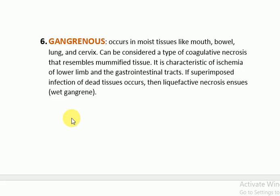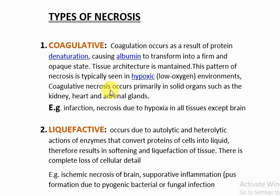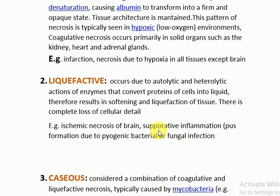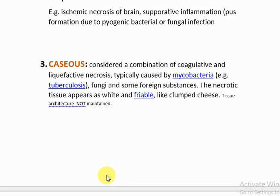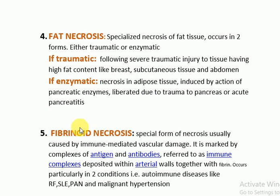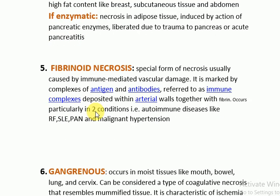To summarize the types of necrosis: Coagulative — protein denaturation, tissue architecture maintained; examples include infarction and hypoxic necrosis in all tissues except brain. Liquefactive — degradation of proteins, tissue architecture not maintained; example is necrosis of the brain. Caseous — occurs in TB, combination of coagulative and liquefactive, tissue architecture not maintained. Fat necrosis — specialized type, may be traumatic or enzymatic. Fibrinoid necrosis — immune complex deposition in arterial walls, occurs in autoimmune diseases or malignant hypertension.